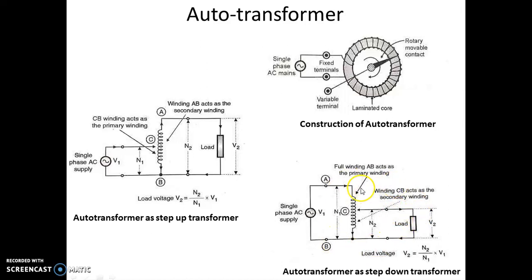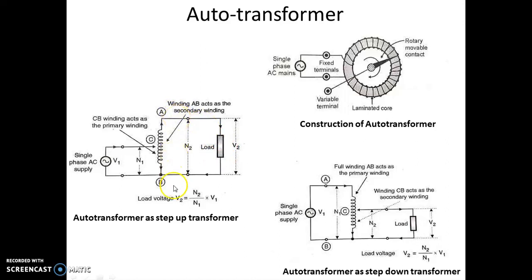Now we will see how to use the auto transformer as a step-up transformer. Here, the single-phase AC supply is connected between the movable contact C and fixed contact B. So CB is the primary winding with number of turns N1. The load is connected between terminals A and B, so winding AB acts as the secondary winding with number of turns N2.